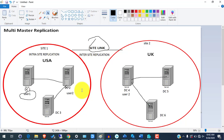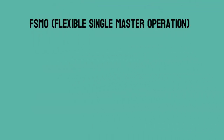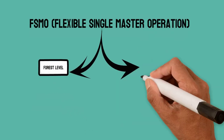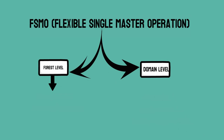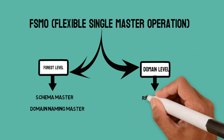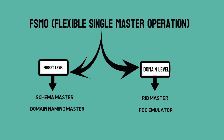FSMO has five roles, each with its own duty. Think of it like a school where you have a math teacher and a science teacher — each has their own responsibility. FSMO stands for Flexible Single Master Operation. There are two levels: forest level, which includes Schema Master and Domain Naming Master, and domain level, which includes RID Master, PDC Emulator, and Infrastructure Master.